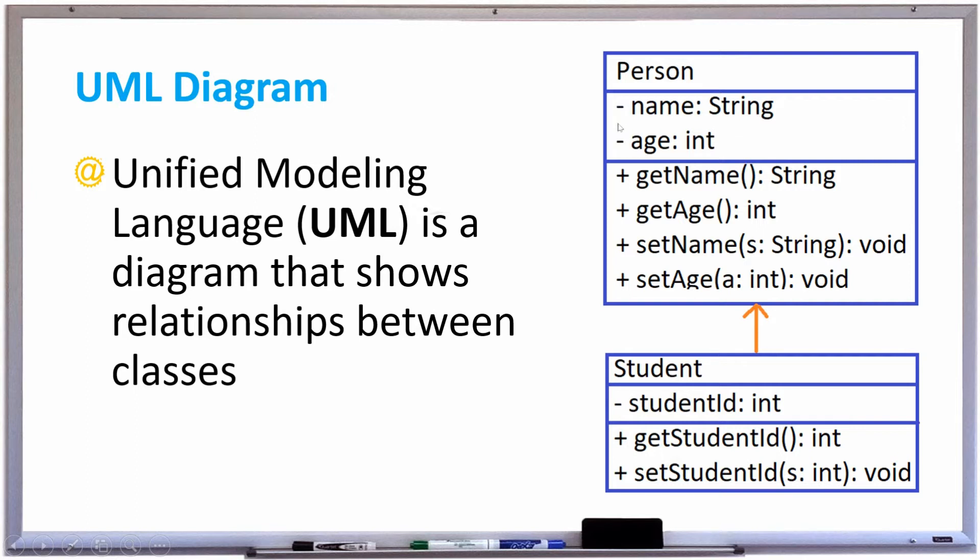The little hyphen means that they're both private. The plus sign means that it's public. Also, the hashtag sign, the little pound sign, means something is protected, which we'll talk about later in a different video.